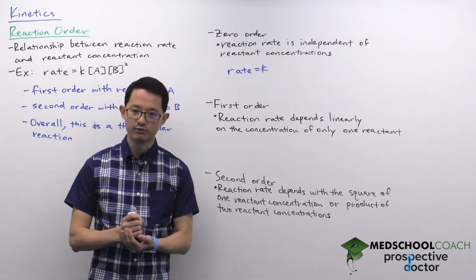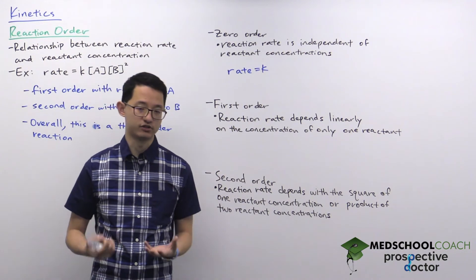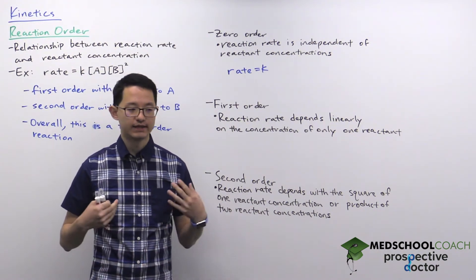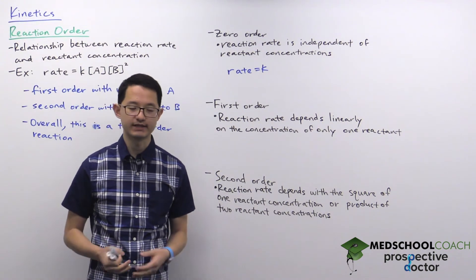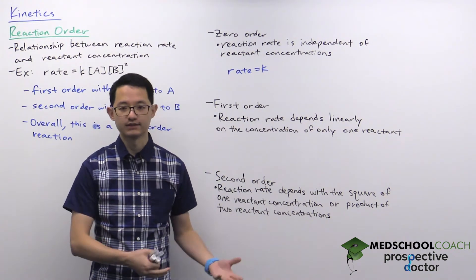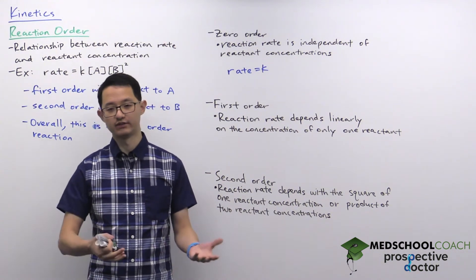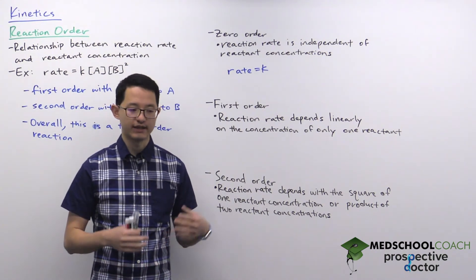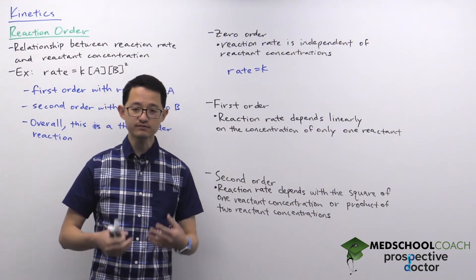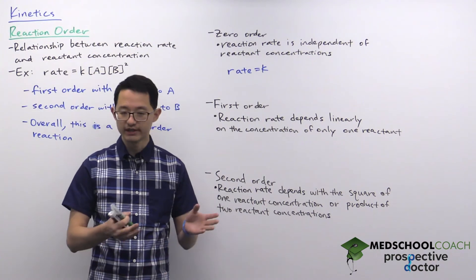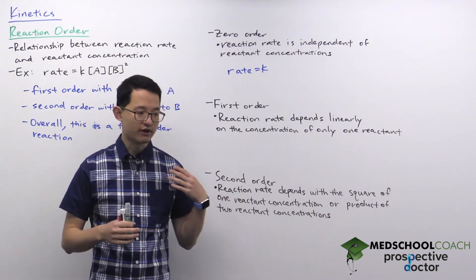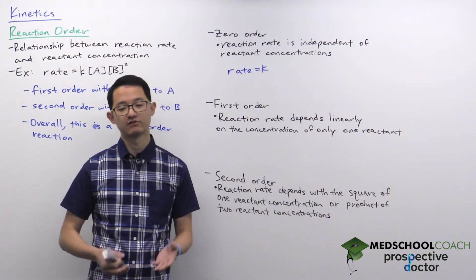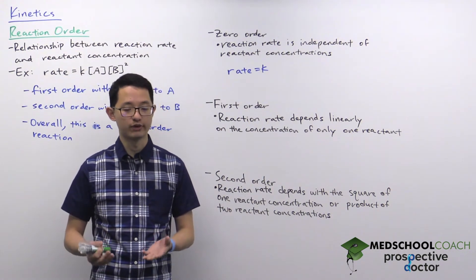You might wonder how a reaction's rate can not depend on the concentration of reactants. One example is a reaction catalyzed by an enzyme. Enzymes increase the rate of reaction by decreasing the activation energy. If you add only a small amount of enzyme such that the enzymes are already saturated by reactants, they are catalyzing the reaction as fast as they possibly can. Adding more reactants won't speed up the reaction because the enzymes are already saturated.